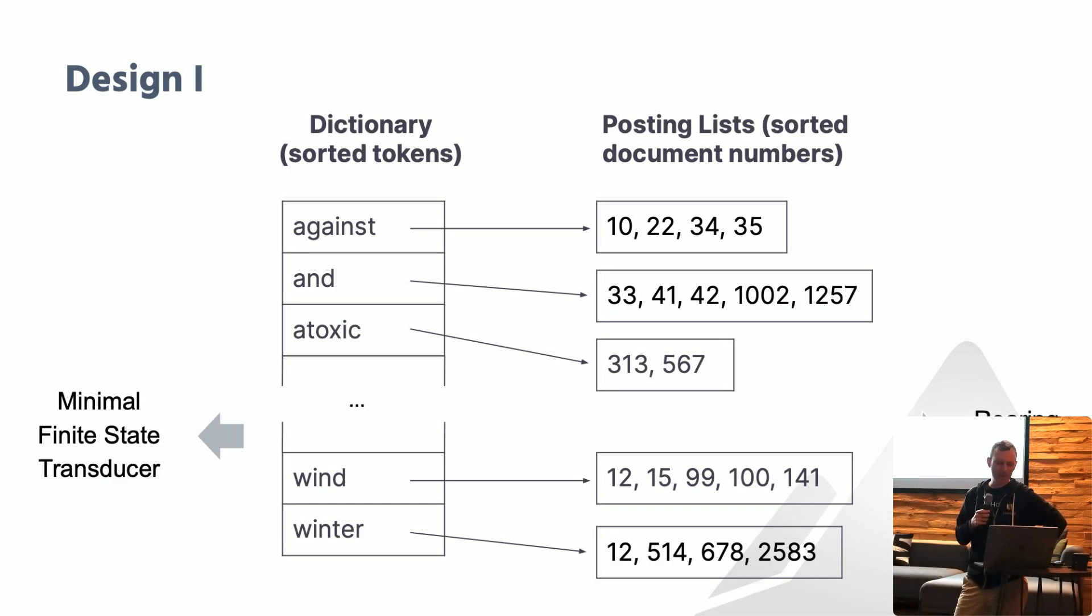Let's briefly talk about the design of the index, and I promise I will not bore you with UML class diagrams. Conceptually, every inverted index has two parts. There's a so-called dictionary on the left side, and then there are posting lists on the right side. The dictionary contains all the sorted tokens stored in the index. Every token then points to a posting list, which is a sorted sequence of document identifiers or document numbers, which are the documents that contain the corresponding token. What will happen at query time is the system will do a binary search on the dictionary to find the right posting list, and then return all the document numbers.